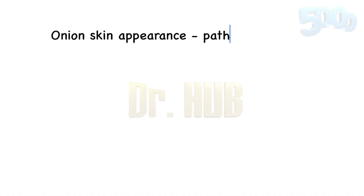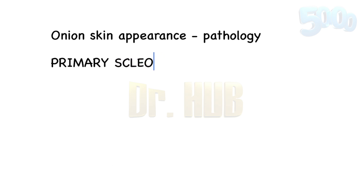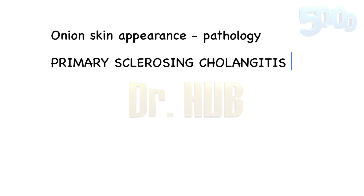Let's look at the onion skin appearance — what we are seeing in terms of pathology. The first one is primary sclerosing cholangitis, which includes onion skin fibrosis. Next is Castleman disease.